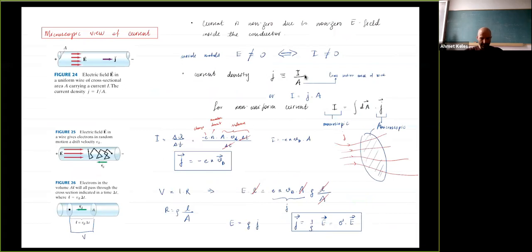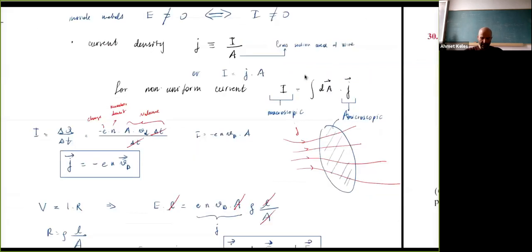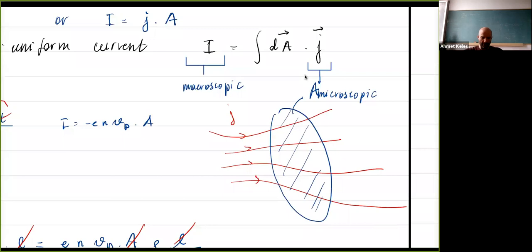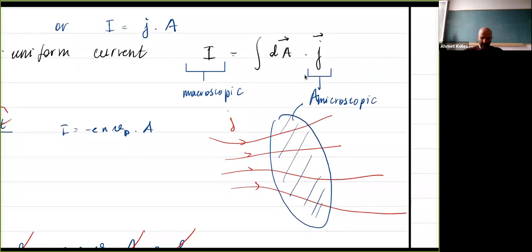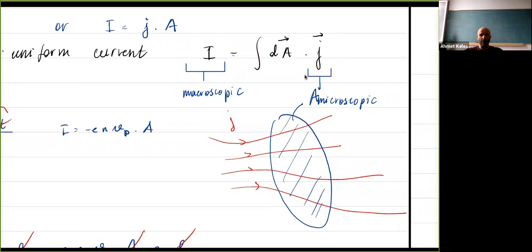Microscopically, current is non-zero if and only if the electric field is non-zero inside the metal. We introduced current density — the density of currents. If there is a cross-sectional area with currents passing through it, integrating the current density (which is a vector, with a dot product against the area vector) over that area gives the total current.